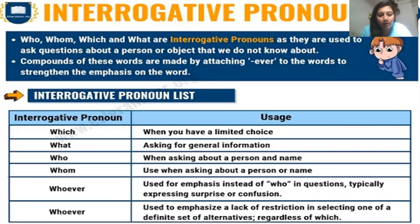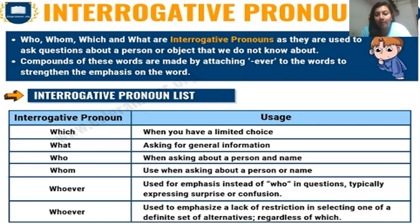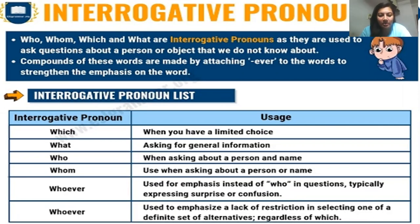Here the interrogative pronoun list is given with their purposes. 'Which' is used when you have a limited choice; it is also used for non-living objects or things. 'What' is used for asking general information. 'Who' is used when asking about a person's name or identity. 'Whom' is also used when asking about a person. 'Whoever' is used when you are not aware of the specific person and want to emphasize a condition.